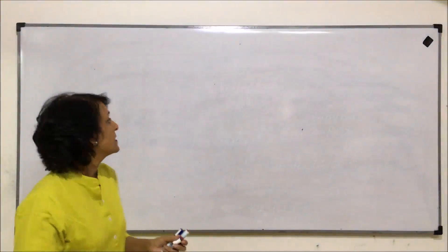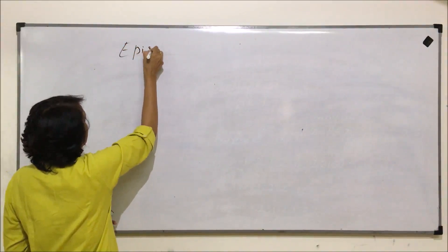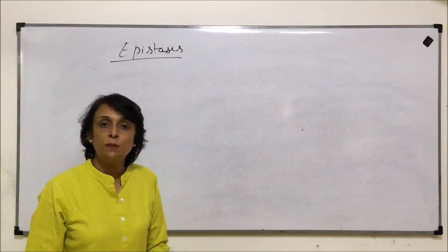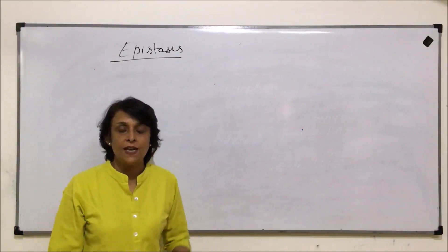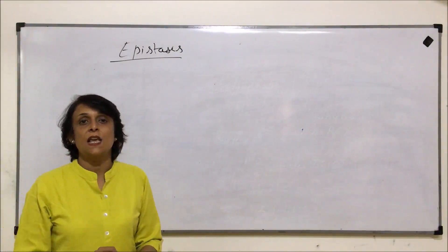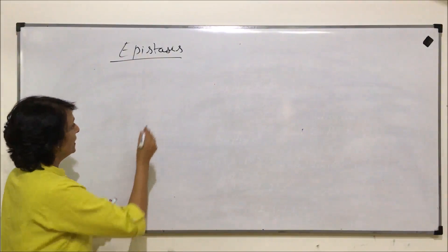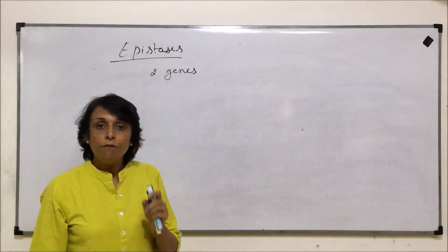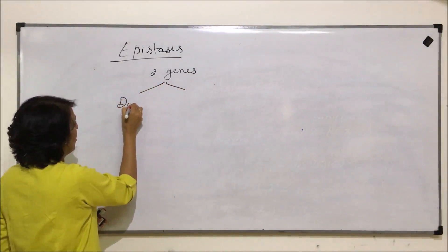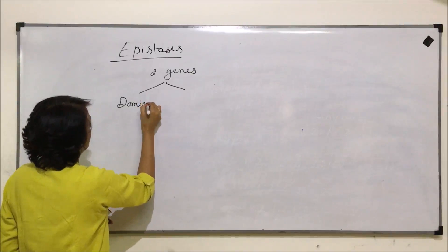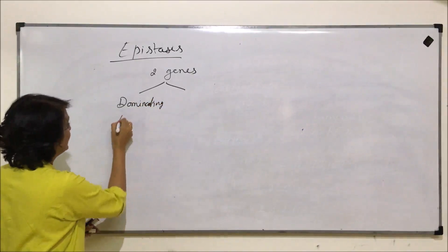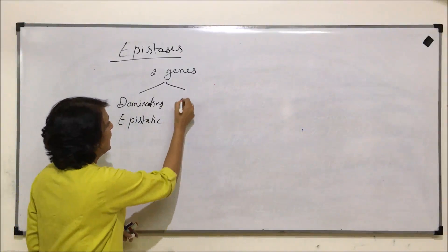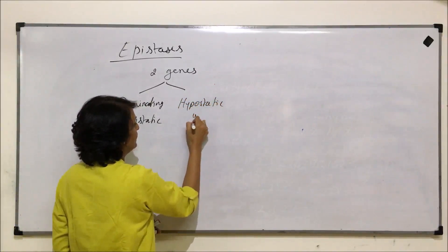In this video we will talk about epistasis. Before we take the two types - dominant epistasis and recessive epistasis - we need to understand what exactly is meant by epistasis. Epistasis actually means 'sitting over', meaning we are talking of two genes located at different loci, and one of these two genes is dominating or is epistatic, and the other gene gets dominated or suppressed - that is known as the hypostatic gene.